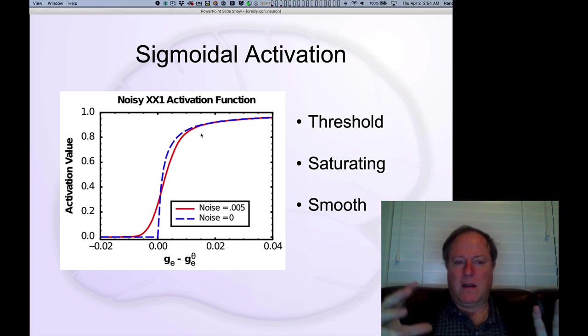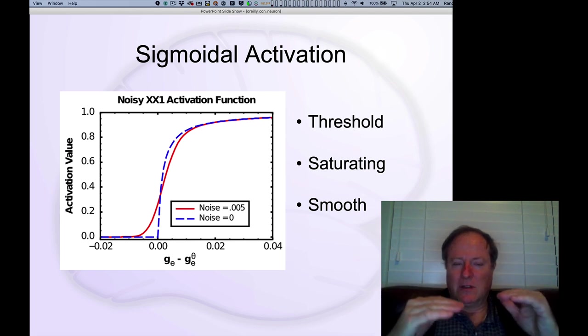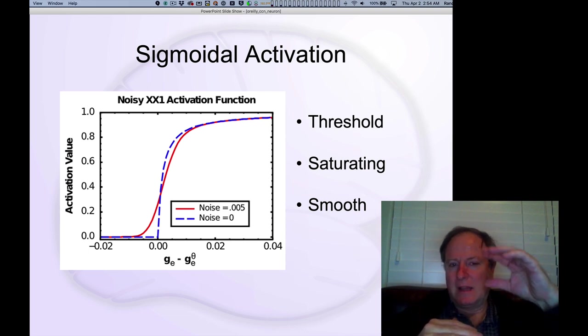That one gets smaller and smaller relative to x as x gets larger, and so it just becomes essentially x over x, which is really just one. That saturating property of the neuron is important because neurons can't fire above a certain maximum firing rate. As I mentioned, it's typically about a hundred times a second.